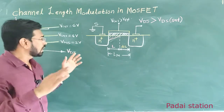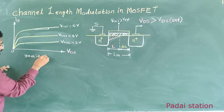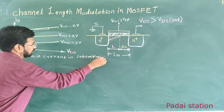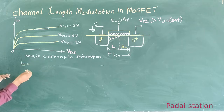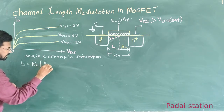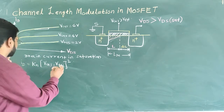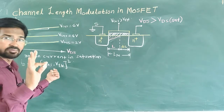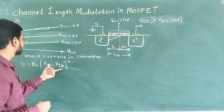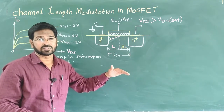As we know, we have a drain current in saturation. The drain current when the transistor is in saturation — we have already discussed this equation. ID is equal to KN times (VGS minus VTN), the overdrive voltage, squared. This equation tells us that the drain current depends only upon VGS, because VTN is constant — it is the threshold voltage for the NMOS transistor. According to this equation, we have zero slope for the VI characteristic. That is the ideal VI characteristic.